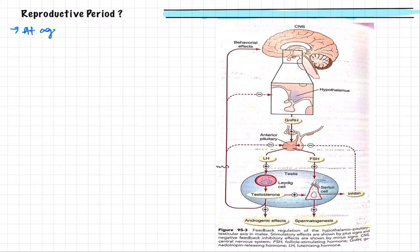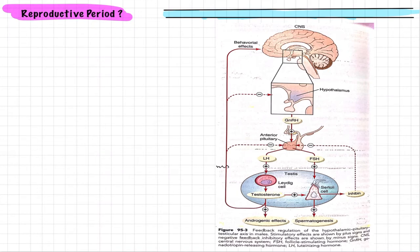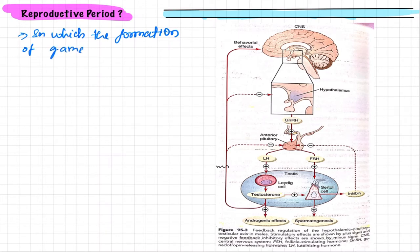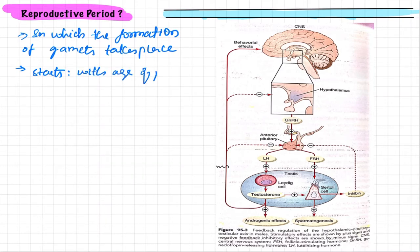The reproductive period is the period in which the formation of gametes takes place. This period starts with the age of puberty, which is nearly 10 to 14 years. So spermatogenesis begins at puberty.